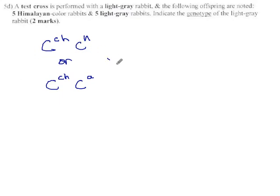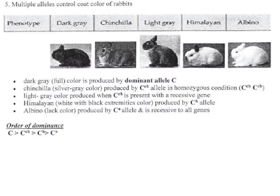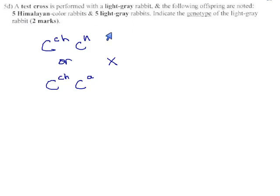This is our light gray, and we're going to cross this with—do you remember what we do when we conduct a test cross? A test cross is a cross with the most recessive creature you can possibly find, which in the case of these rabbits is C^a C^a. They say it's recessive to all other alleles. So a test cross in rabbits means you must use an albino as the other parent, C^a C^a.